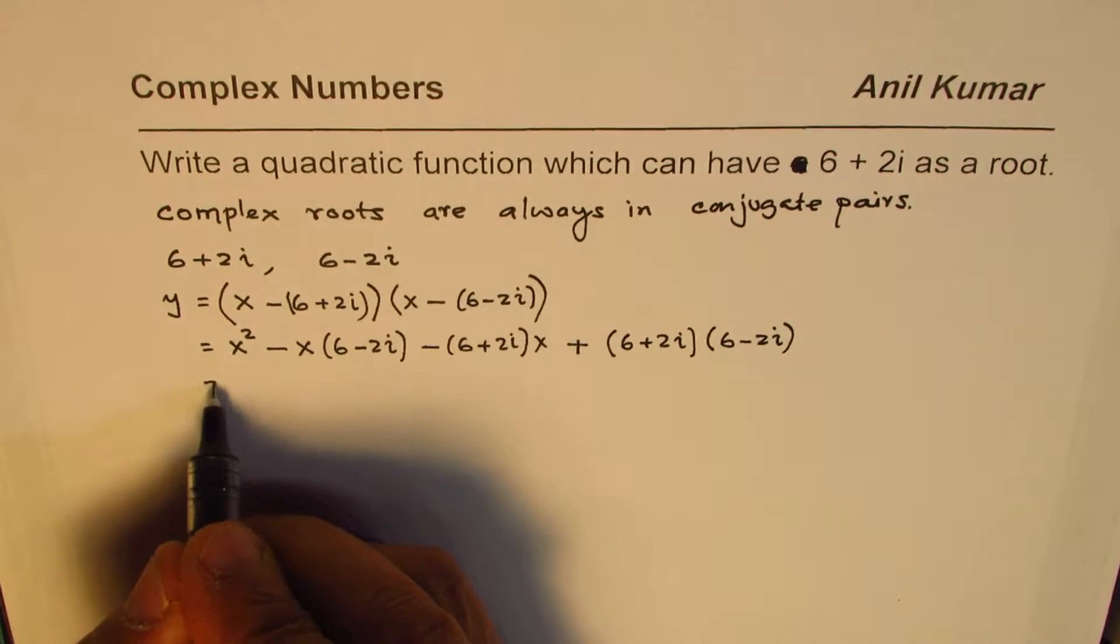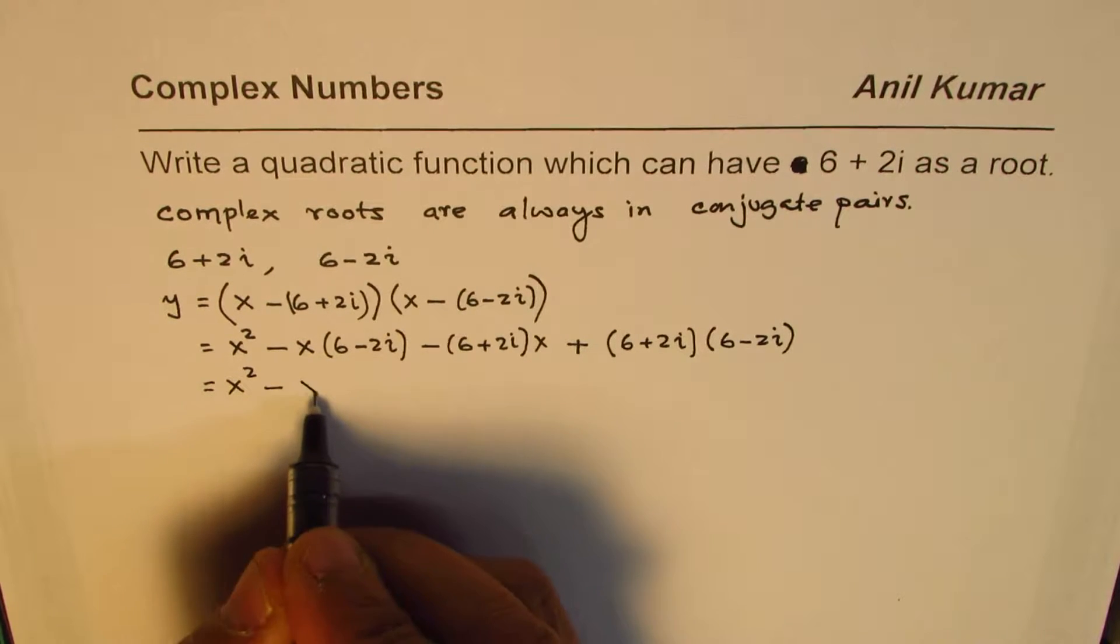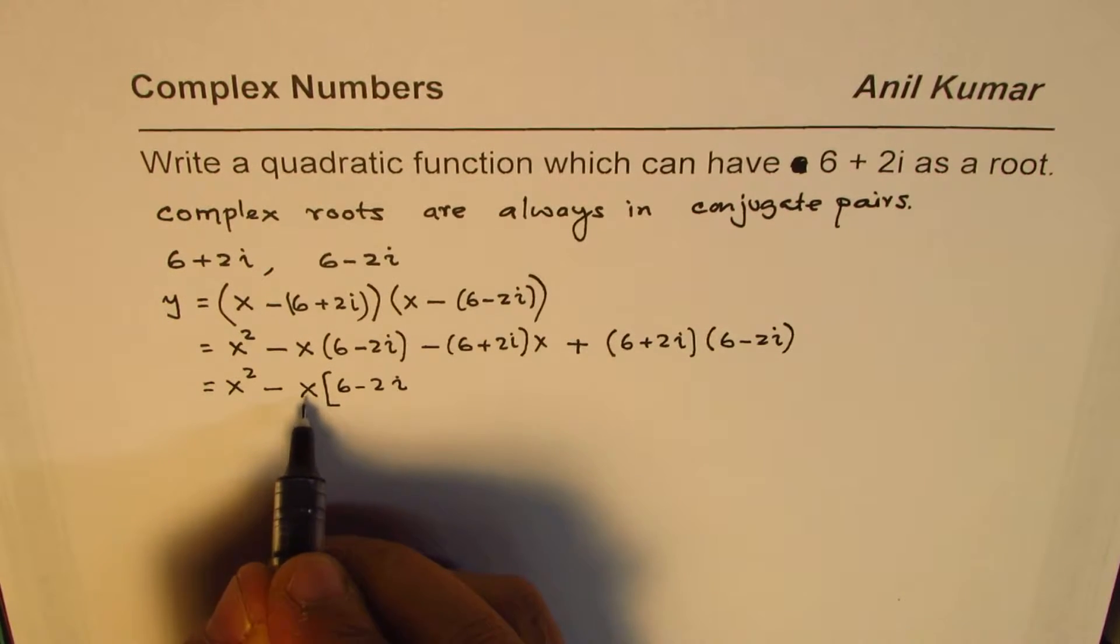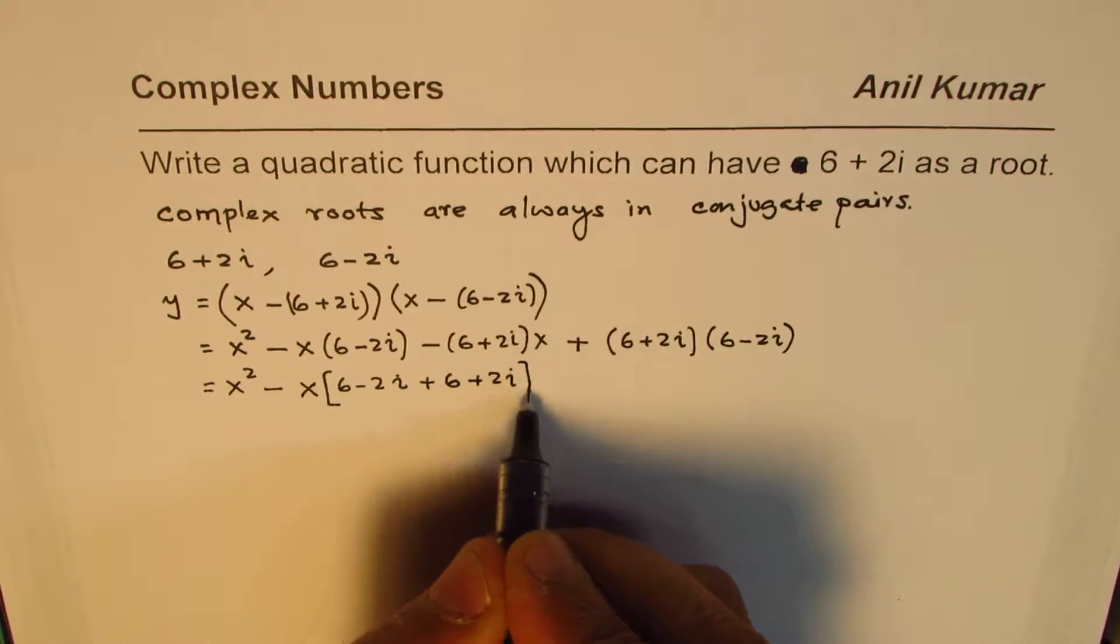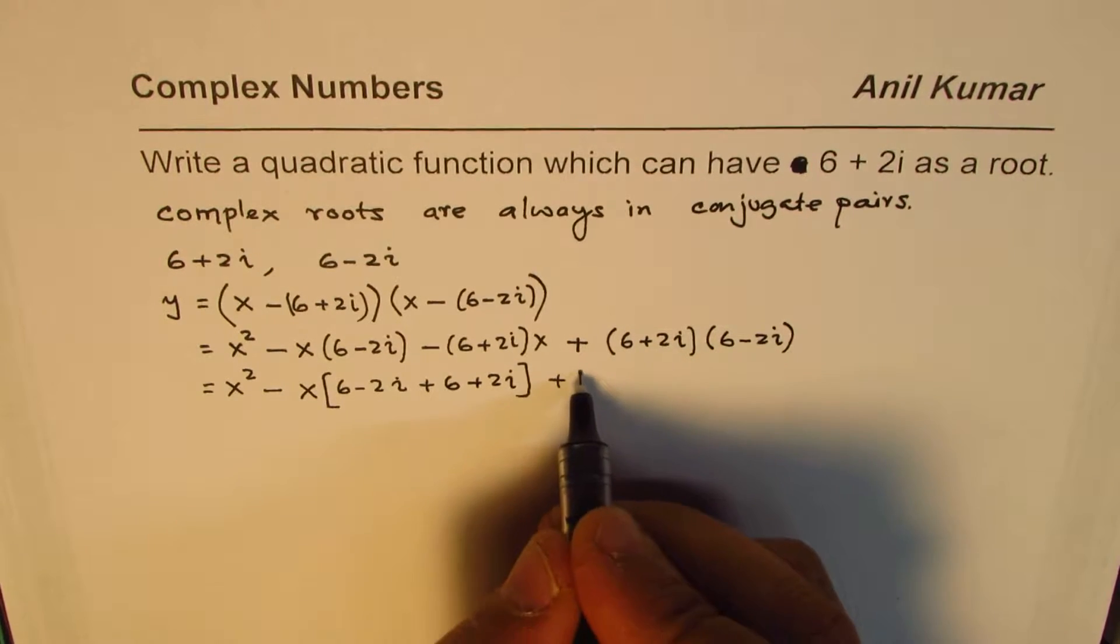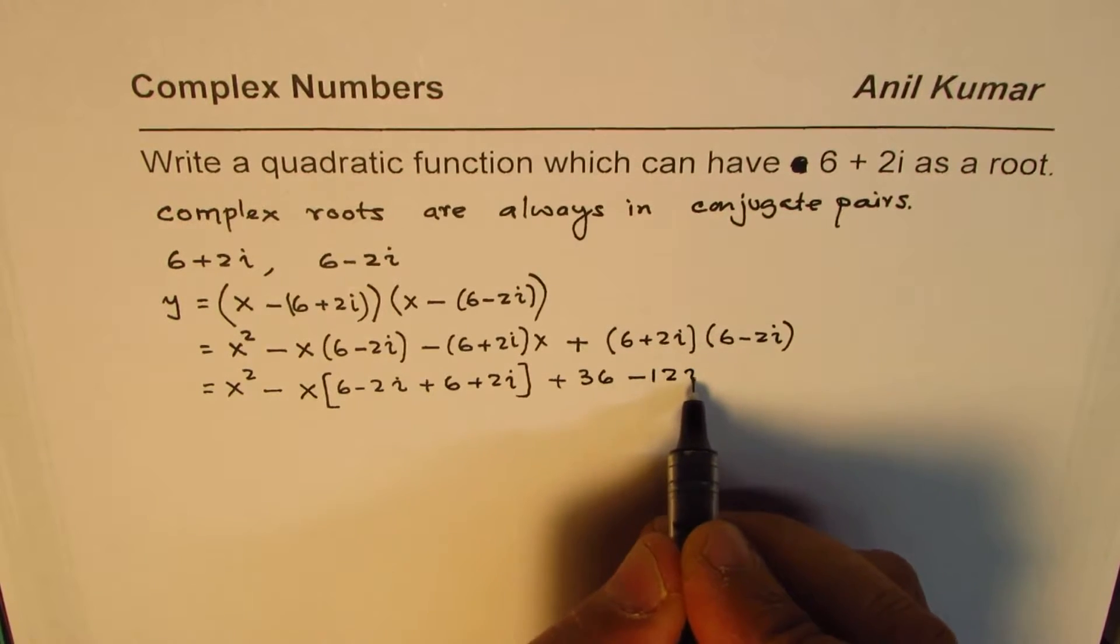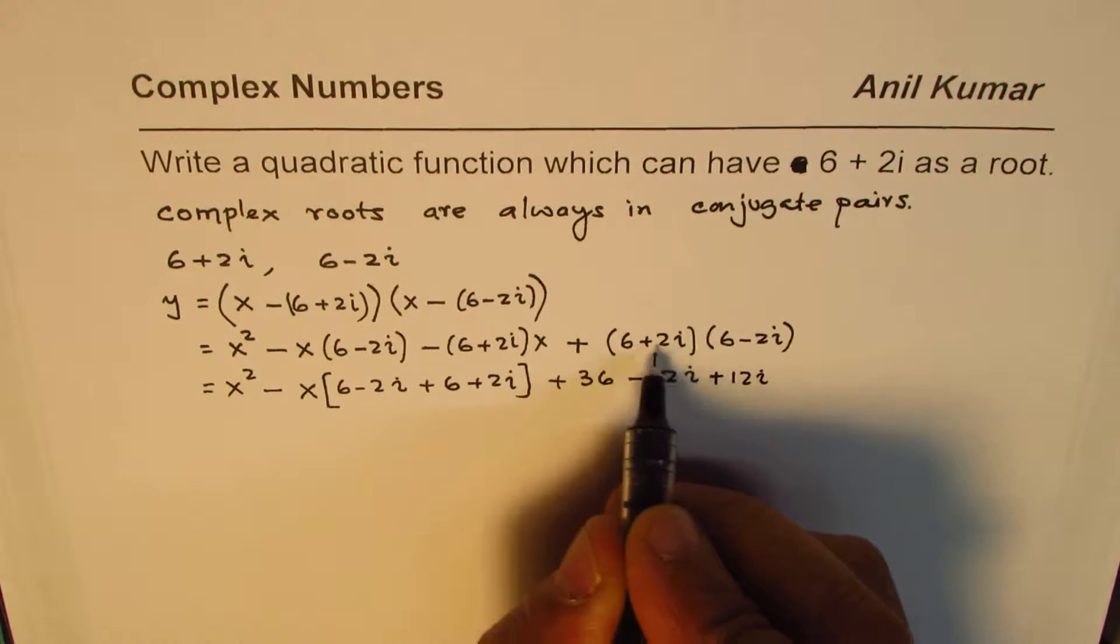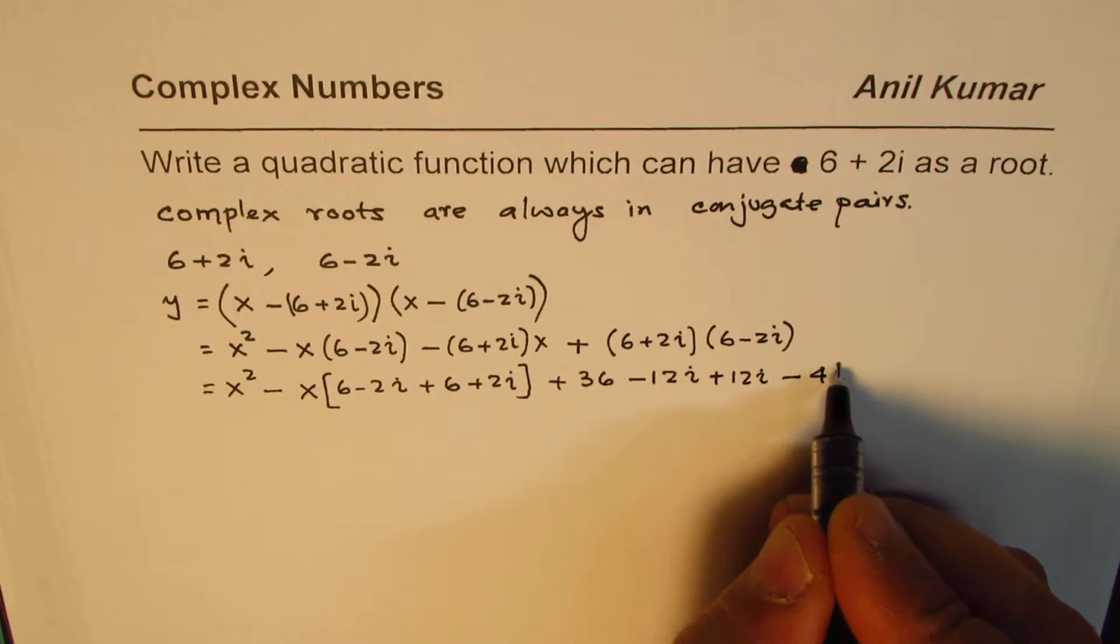Let me take x common here. Then, what do we get? We get 6 minus 2i. I have taken minus x common. So, we get plus 6 plus 2i. Is that okay? And here, we have the product. So, we can multiply them. 6 times 6 is 36 minus 6 times 2i gives us 12i. 2i times 6 is plus 12i. And 2i times 2i with a minus sign here gives us minus 4i square.